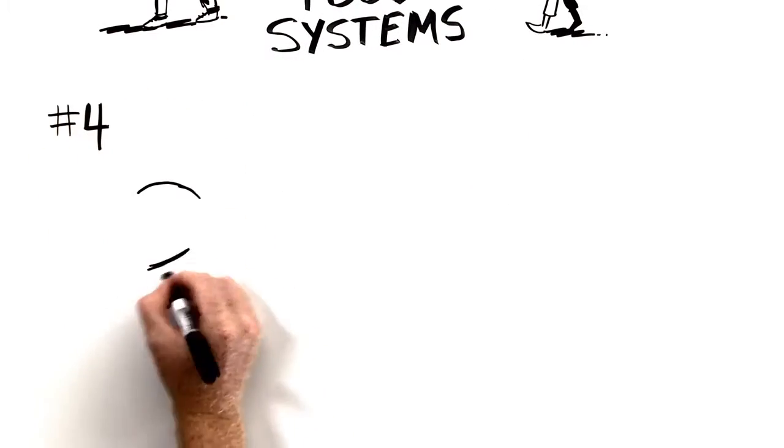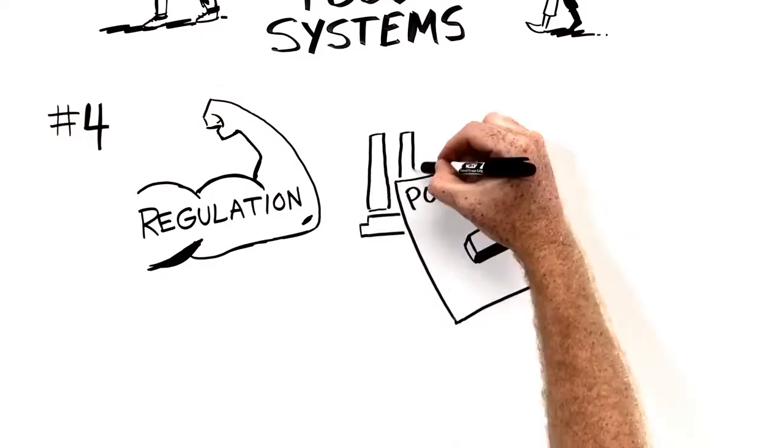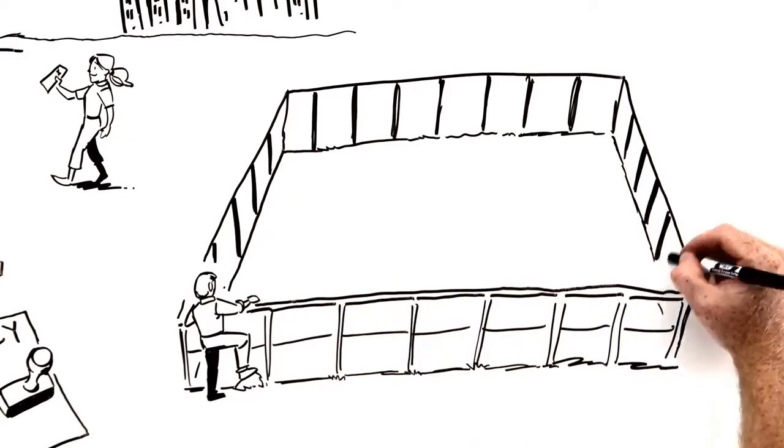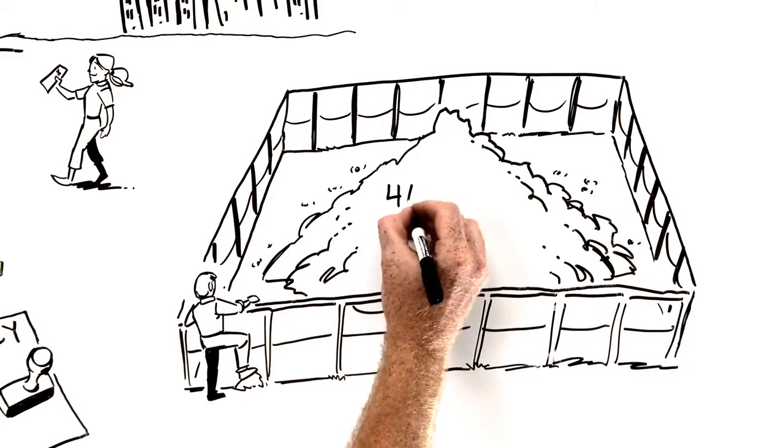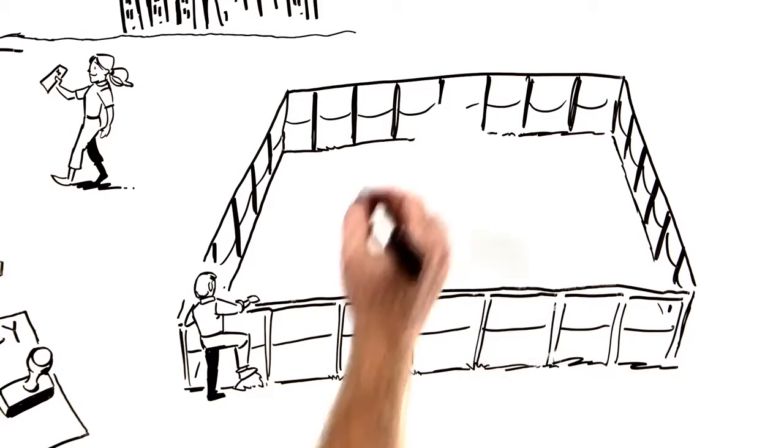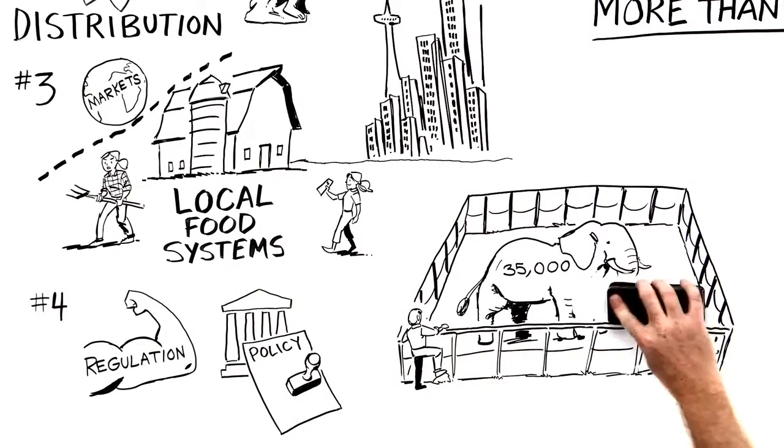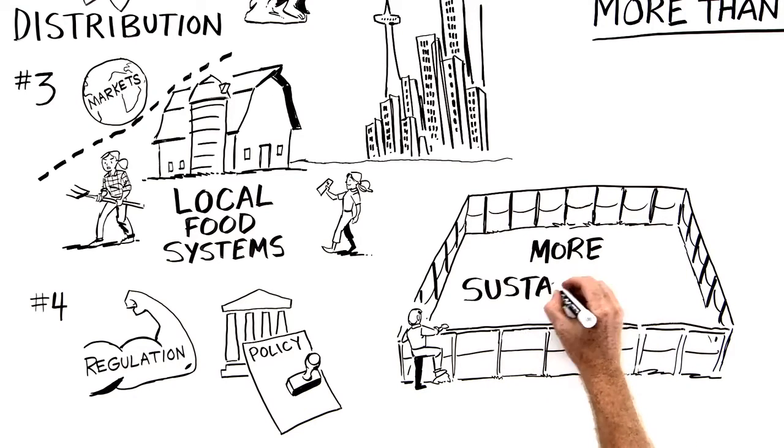Fourth, none of this will be possible without stronger regulation and proactive government policy. I was confronted with the need for better regulation while on a recent tour of a feedlot that was licensed to hold 100,000 cows. There I saw a 410,000 ton pile of manure. That's the weight of about 35,000 elephants. It was a sad reminder of the need for governments to get serious about promoting more sustainable farming.